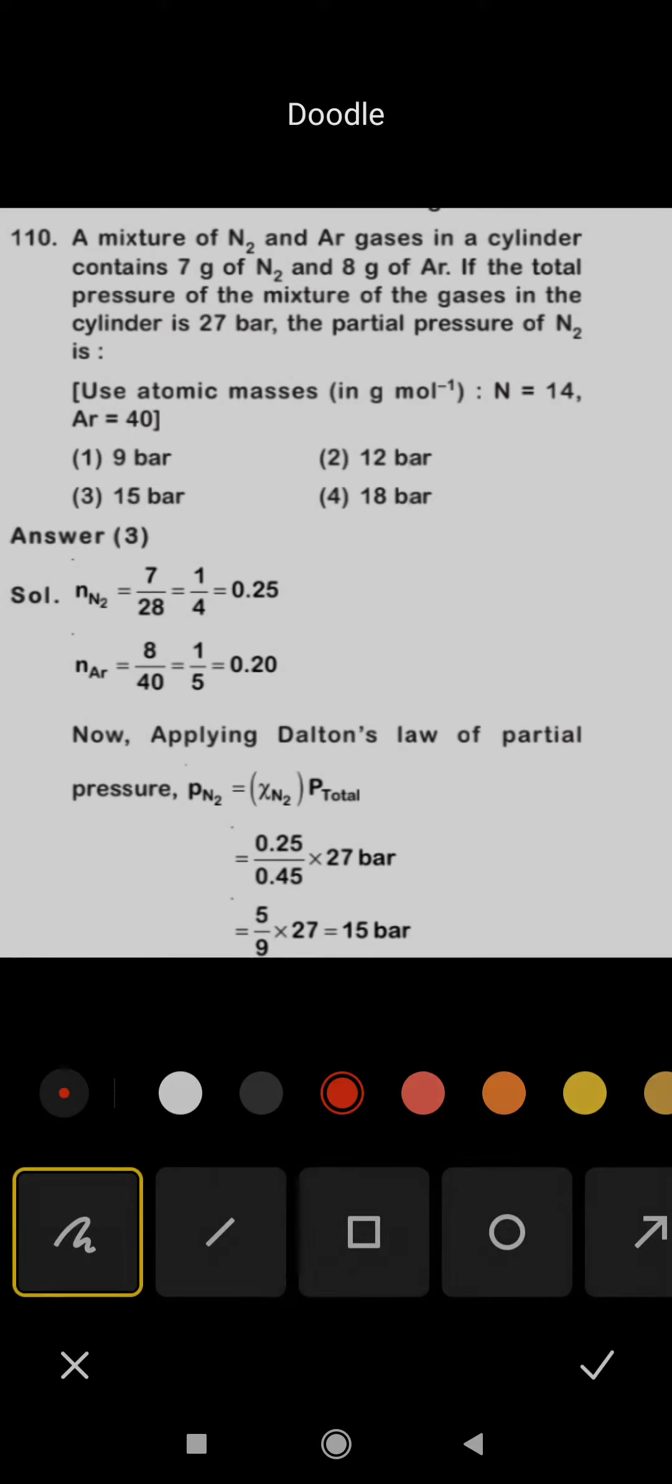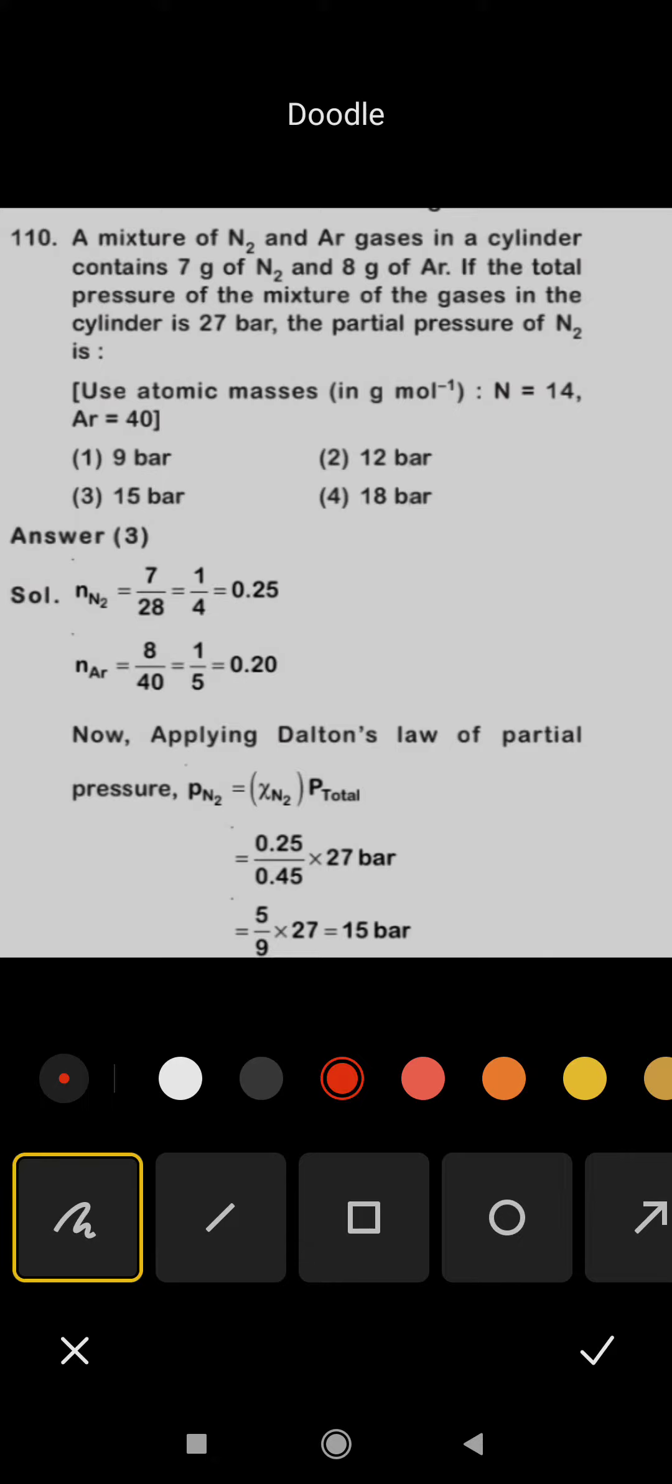Hello students, this is Manisha Thomas and I am with NEET examination question 110. This question is related to the gaseous laws. A mixture of nitrogen and argon gases in a cylinder contains 7 grams of nitrogen and 8 grams of argon.